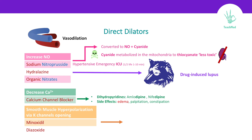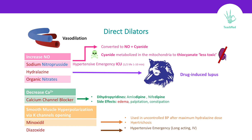Next, minoxidil. Minoxidil is used in cases of uncontrolled blood pressure after a maximum hydralazine dose because it's more potent. One of the side effects is hypertrichosis, which means growth of hair — and actually people nowadays are using it to grow hair. Lastly, diazoxide is used in cases of hypertensive emergency and it can also reduce insulin release, so sometimes it is considered for hypoglycemia secondary to insulinoma.